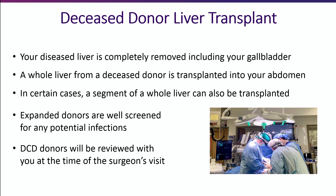Expanded criteria donors may include the following characteristics, such as a donor with an age over 70, a donor with a high-risk social behavior, or a donor with a history of active virus, such as hepatitis B or hepatitis C. When our transplant surgery team evaluates your medical case, they will look at a variety of factors, such as your specific liver disease, your age, and current state of health, in order to determine if an expanded criteria donor could be a suitable option for you.